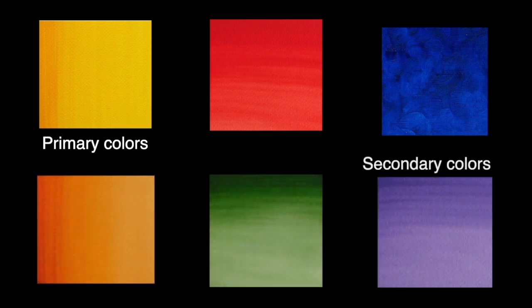The colors you purchased for this class are primary colors: yellow, red, and blue. When they are mixed together, they create secondary colors: orange, green, and purple. The six colors on your supply list are these primary and secondary colors.